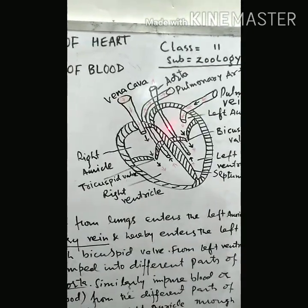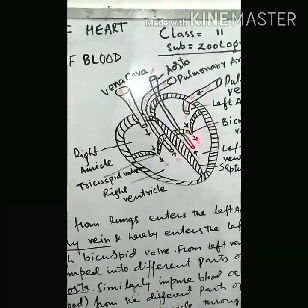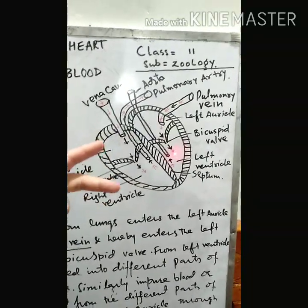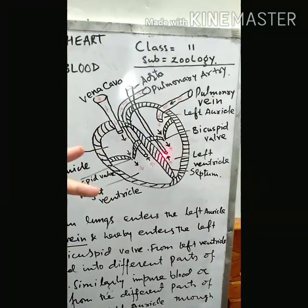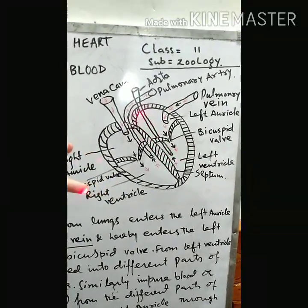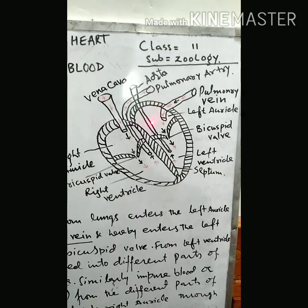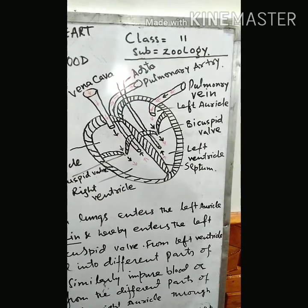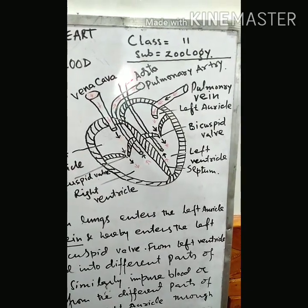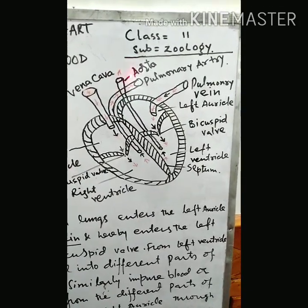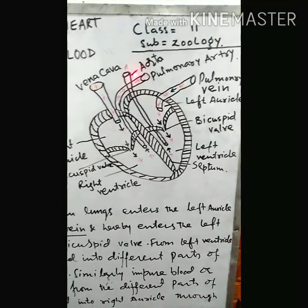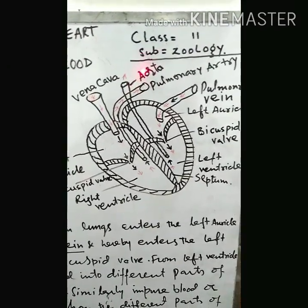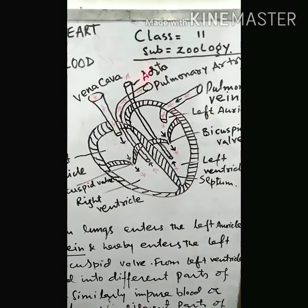Now blood from the left auricle enters the left ventricle. From the left ventricle, blood is pumped into the different parts of the body by the large artery that is called the aorta.